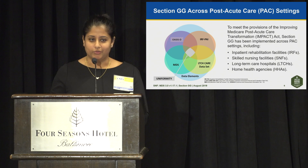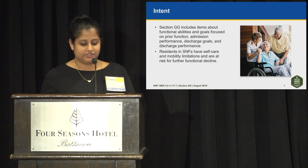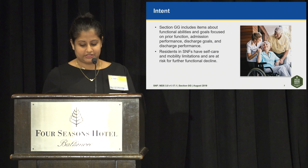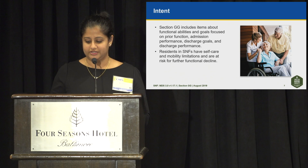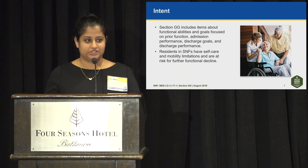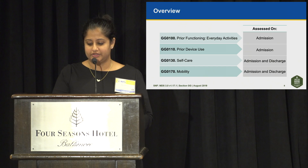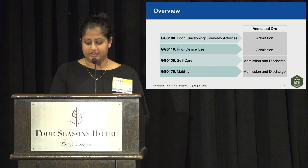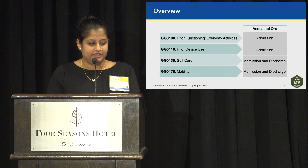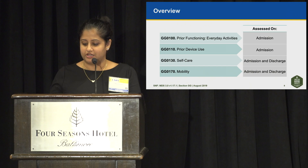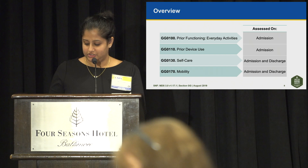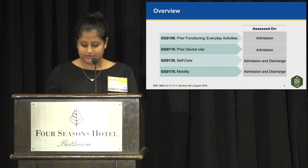The intent of Section GG is to include items about functional abilities and goals focused on prior function, admission performance, discharge goals, and discharge performance. Residents in SNFs have self-care and mobility limitations and are at risk for further functional decline. There are four items to focus on with Section GG: prior functioning and everyday activities and prior device use, both assessed on admission, and GG0130 self-care and GG0170 mobility, addressed on both admission and discharge. Some GG0130 and GG0170 data elements are on the optional IPA, which is used in the PDPM.